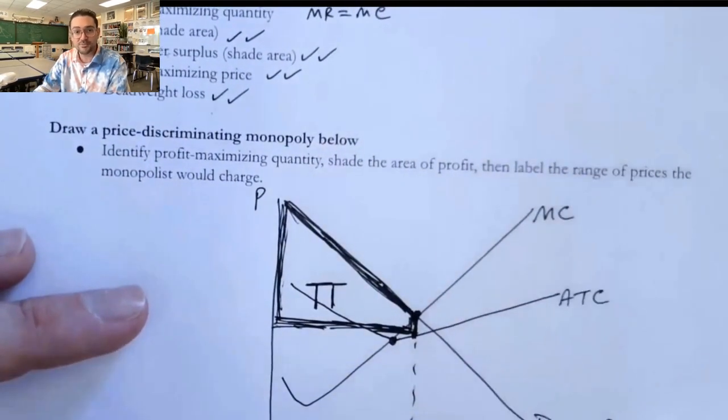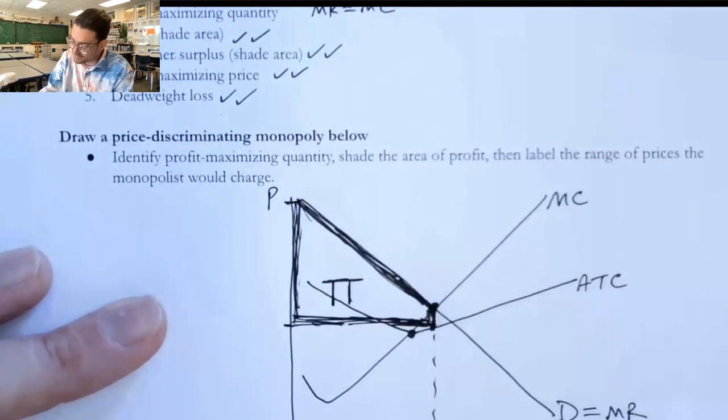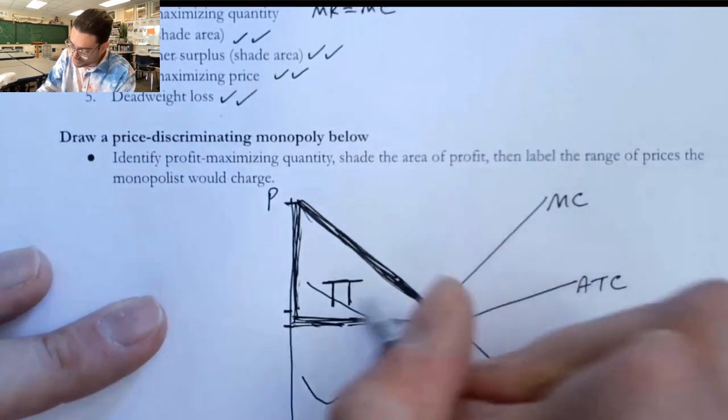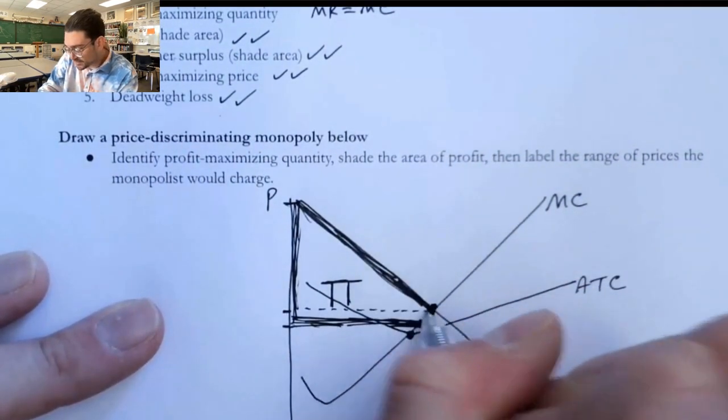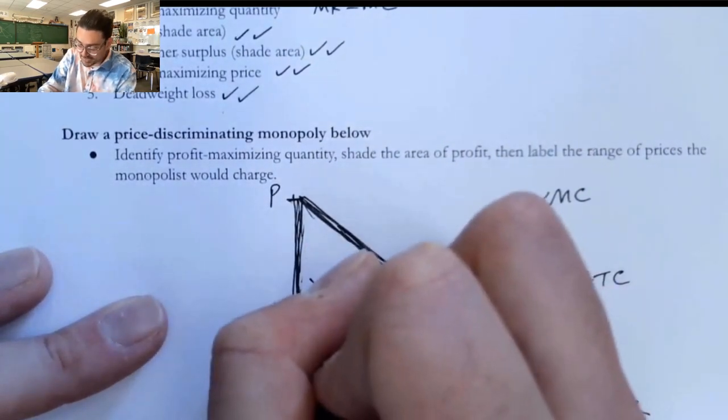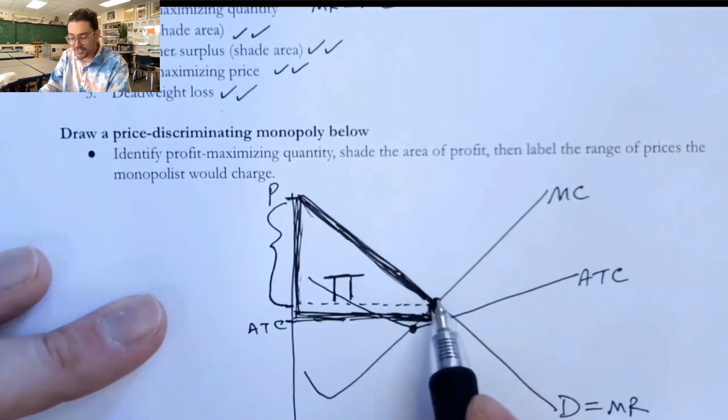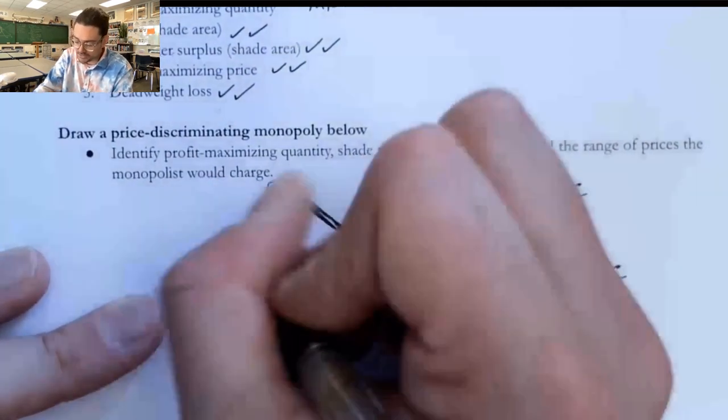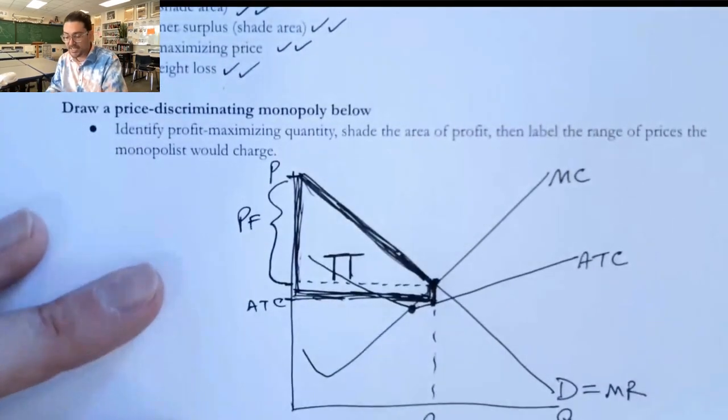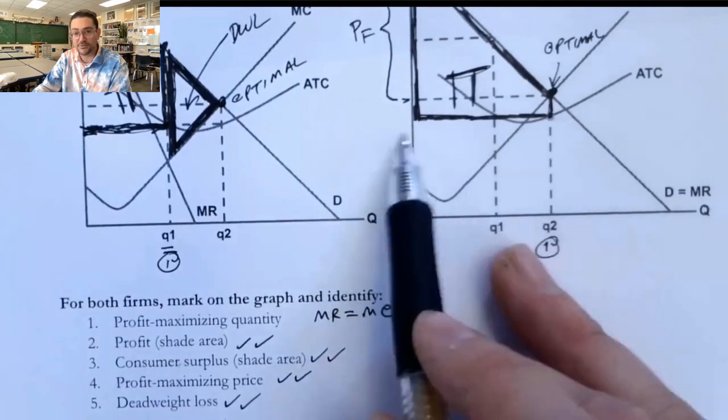And then label the range of prices that the monopolist would charge. Well, they're charging all the way from here to down. So the tricky part is actually knowing that they don't quite price here because that's the ATC. The bottom of their price range is here, where actually the quantity that the firm produces connects in with the demand curve. So the range of prices is PF from here to here. The ATC is that lower value. That's what that one corresponds to.